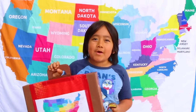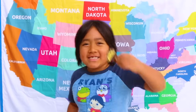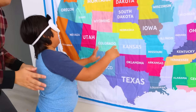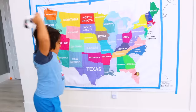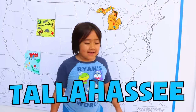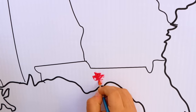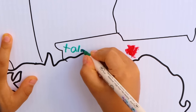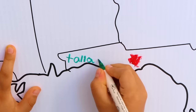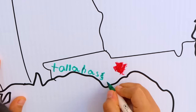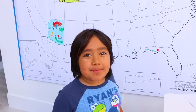Hi guys, and welcome to another virtual road trip with Ryan! Let's see where we're going today with the sun cone - my dad is going to spin me today. I got Florida! First, let's start with the capital of Florida - the name is Tallahassee. Tallahassee is right here, so I'm going to draw a star. T-A-L-L-A-H-A-S-S-E-E. That's how you spell Tallahassee.